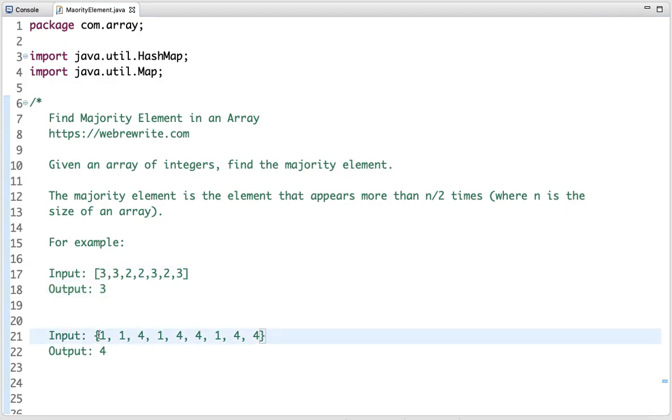Similarly, if you see the second example in which the size of the array is 9, if you do 9 by 2 which is 4.5, any element which appears more than 4 times is the majority element. The output is 4, which appears 5 times in the array. This is the problem statement, and now let's discuss its solution.